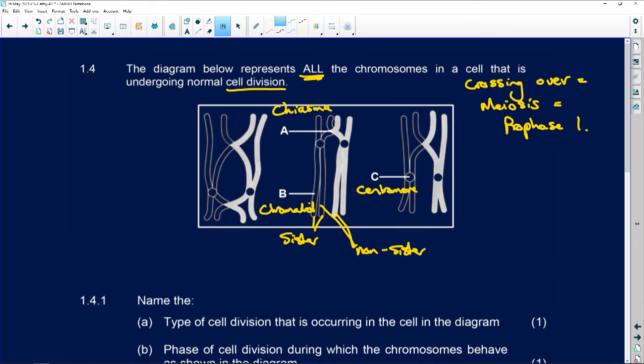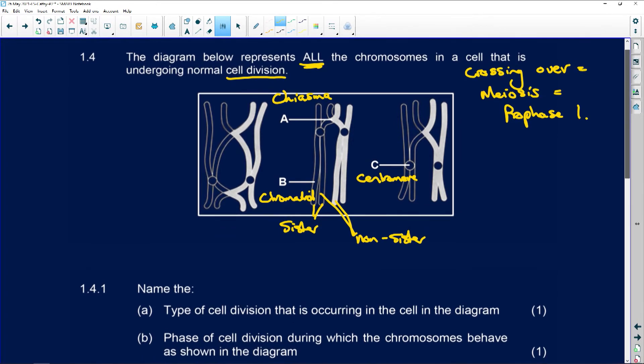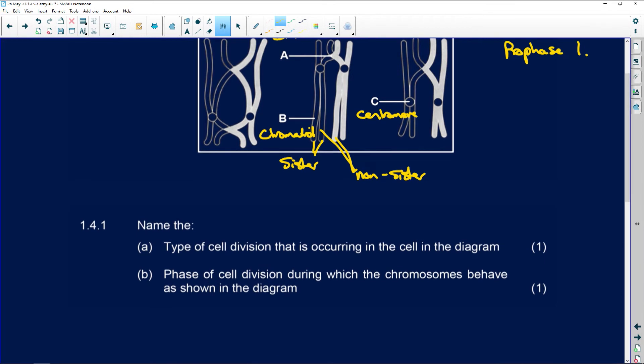Okay, so let's see. What does it hold for us? The type of cell division that is occurring in this cell in the diagram is meiosis. And you could even be more specific and say meiosis 1. The phase of cell division during which the chromosome's behavior is shown, well, it's going to be prophase 1.